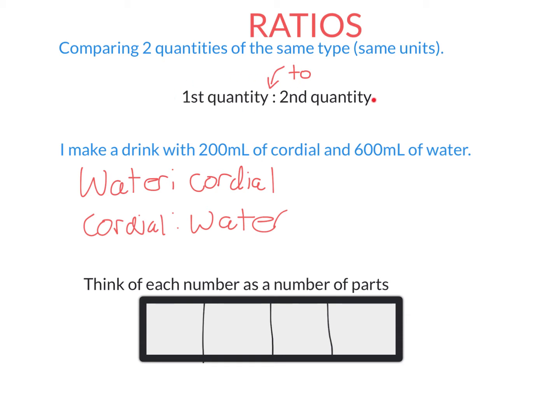We write ratios like this: we have a number and another number with a colon in between. You pronounce that as 'to'. So for example, if you see something like this, it's 3 to 4.